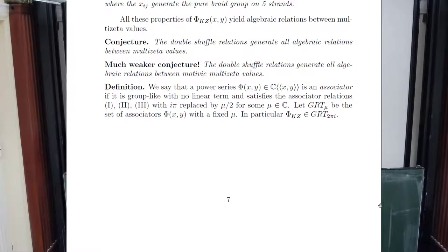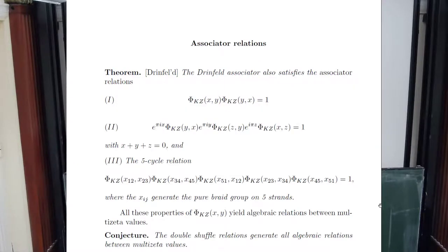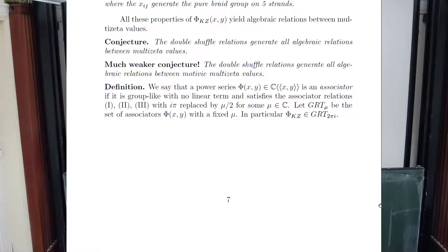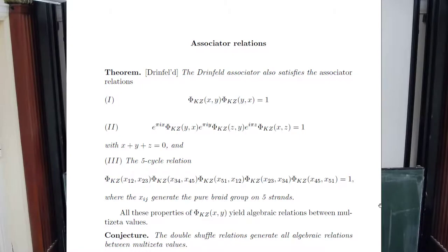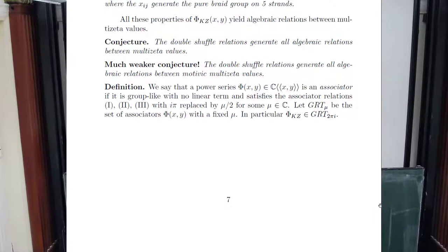Now I want to tell you what a general associator is. Given that we know what the Drinfeld associator is, it gave rise to the general idea. An associator is a power series in x and y, it's group-like, it has no linear term, and it satisfies these same associator relations with just one little difference: instead of i*pi, we can have any complex number mu. So an associator is associated with a certain constant mu—which is twice the exponent that appears here, for various normalization reasons.